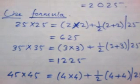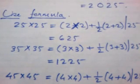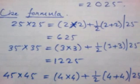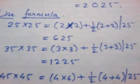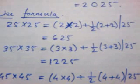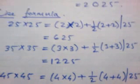For example, 35 into 35, we'll get as 3 into 3 plus half of 3 plus 3. That is 9 plus 3, 12, and at the back 25. Where is it? Isn't it?